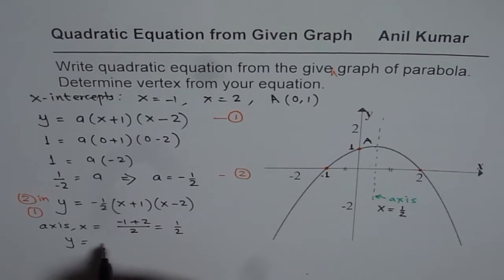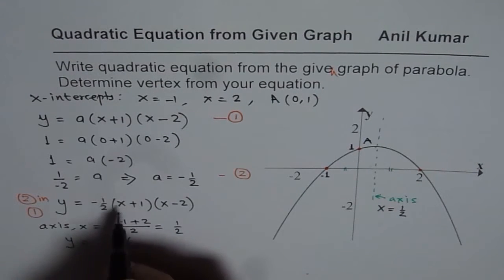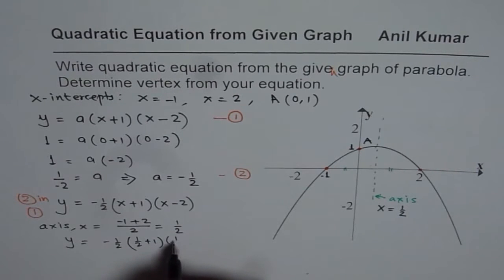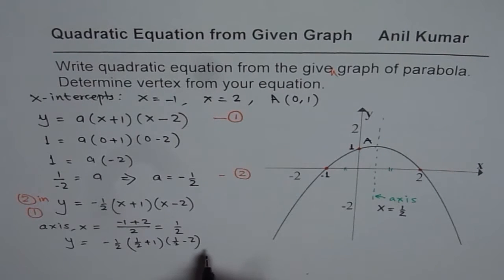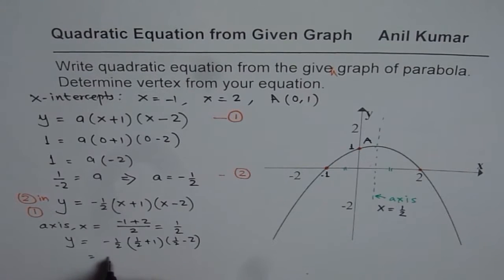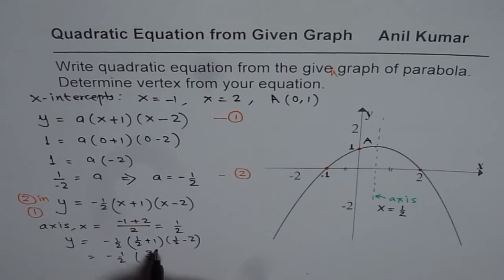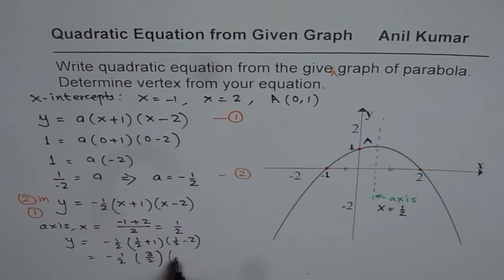So y-value of this is minus half times half plus one times half minus two. So that gives you the value of y. It seems to be slightly more than one. So we can use calculator at this stage to find the answer. Or you can just continue, which is minus half and half plus one is three over two, times when you do half minus two, you get minus four. That is three over two. Four minus one.